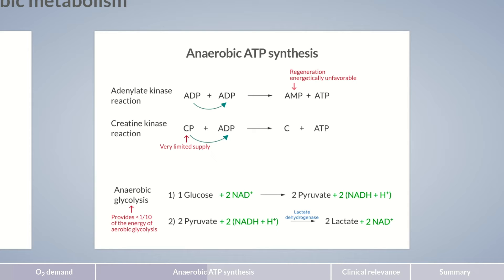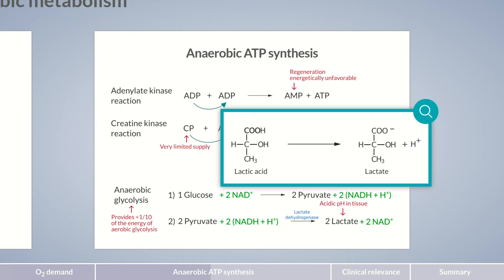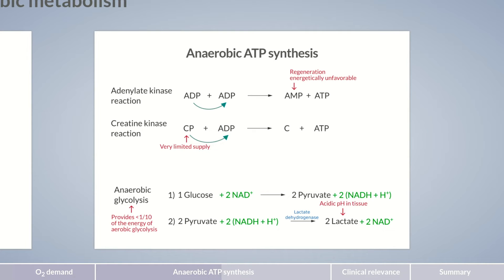Another disadvantage of lactate production is that it lowers tissue pH. Lactate is the anion of lactic acid and dissociates to lactate and protons under physiological conditions. Still, elevated lactate is most likely not the direct cause of the decrease in pH. The acidic effect is usually attributed to proton co-transport processes triggered by lactate transport. To protect cells from damage, lactate dehydrogenase is inhibited by a low ambient pH value, limiting the acidic effects.